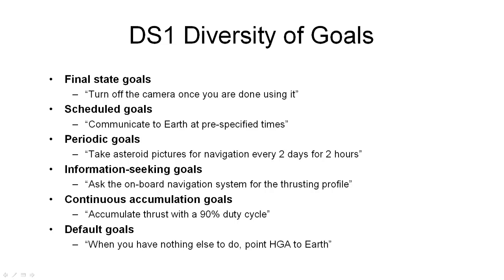Deep Space One planning could deal with a diversity of goals: final state goals such as turning off the camera once done; schedule goals such as communicating to Earth at pre-specified times; periodic goals such as taking a picture for navigation every two days; information-seeking goals such as asking the onboard navigation system to return its profile for the thrusters; continuous accumulation goals such as accumulating enough thrust over a given period without actions needing to occur at specific times; and default goals such as pointing the high-gain antenna back to Earth when nothing else needs to be done.